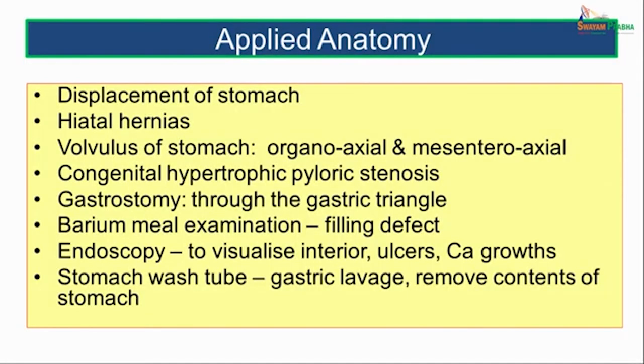Gastrostomy: in cases of esophageal obstruction, this surgery is done so that a feeding tube can be introduced into the stomach. The gastrostomy is done through a gastric triangle bounded by the left lobe of the liver, the left costal margin, and the transverse colon — a triangular area where the stomach directly rests on the anterior abdominal wall. An opening made through this gastric triangle can easily access the stomach for insertion of a feeding tube to provide nutrition to the patient.